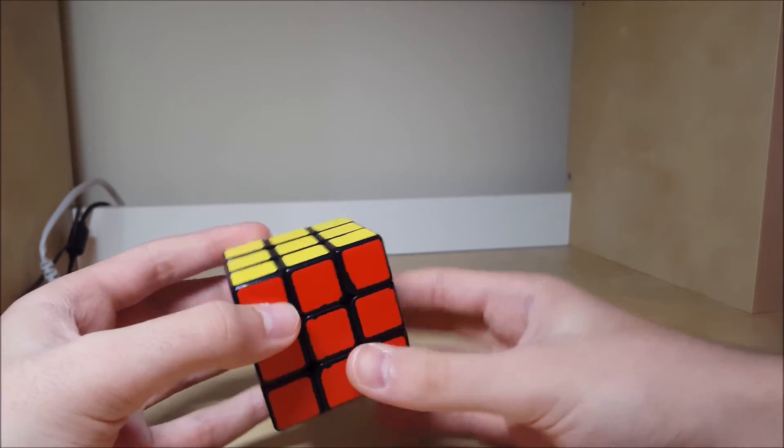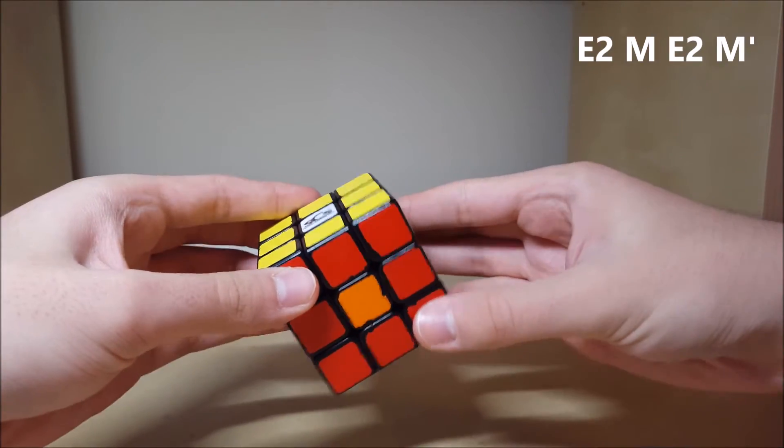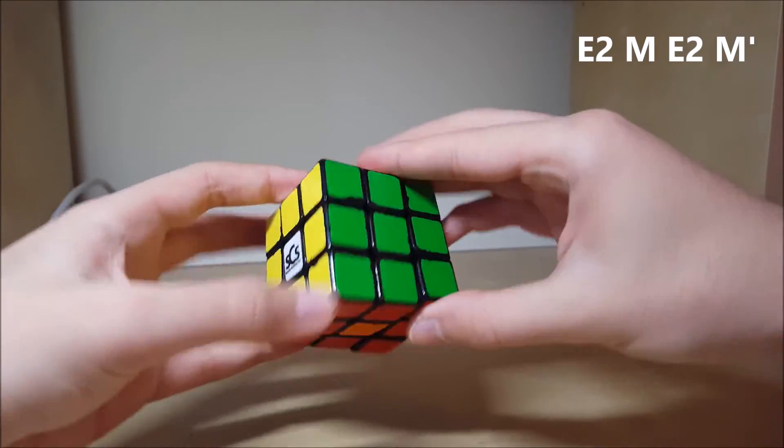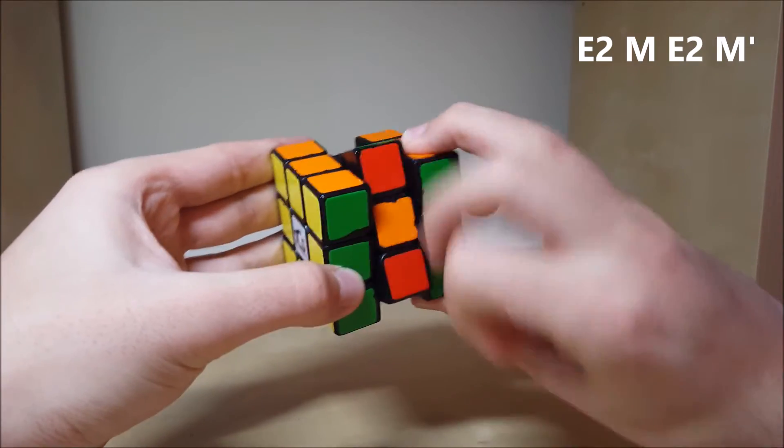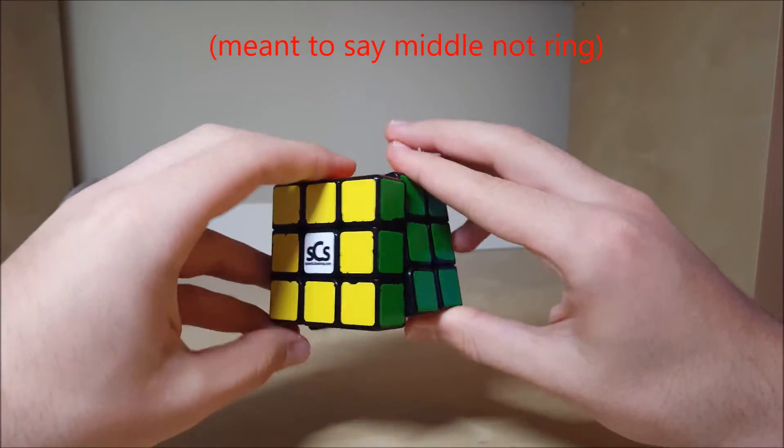But the fastest way to solve it is this right here. It uses E-move, so it's E2, M, E2, M'. I execute it like this. I go, I flick twice, like a U2 finger trick with my index and then ring.